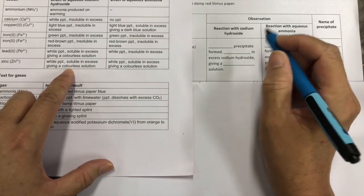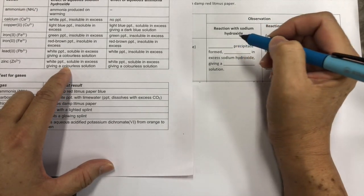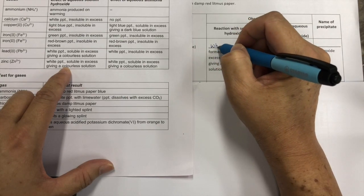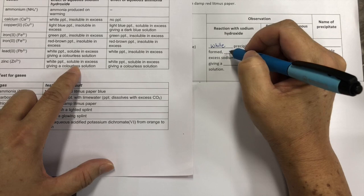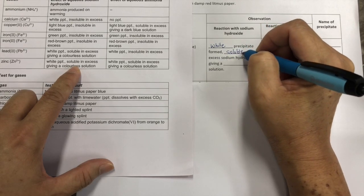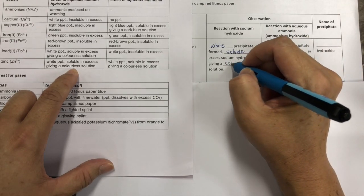So, you write down exactly what is written in your notes for QA. So, white precipitate form, soluble in excess sodium hydroxide, giving a colourless solution.